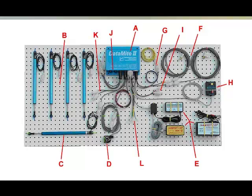Here is a picture of a very useful and affordable budget data acquisition system. You can see the item labeled A is the recorder, or what we call a logger in data acquisition terms. Then you have all sorts of sensors that can be connected to your logger — suspension sensors, throttle position sensors, speed sensors, and all sorts of things.